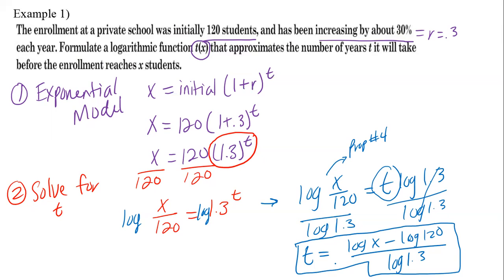So now we have an equation that allows us to figure out how long it will take for us to have a certain population at our private school. So if they're trying to make future plans, they now have a formula to help them do so.